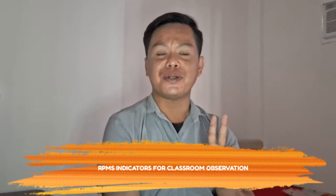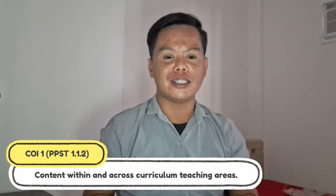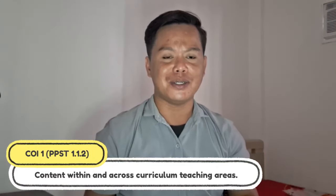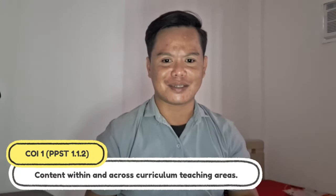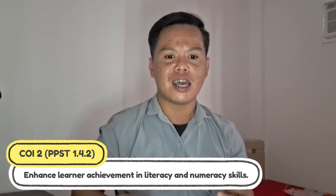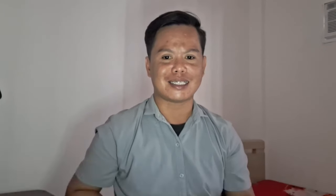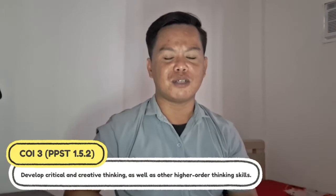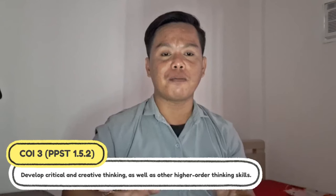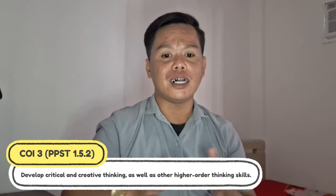This quarter, the classroom observable indicators are the following: Applied knowledge of content in the curriculum teaching areas. Use a range of teaching strategies that enhance learner achievement and literacy skills. Applied a range of teaching strategies to develop critical and creative thinking as well as higher order thinking skills.